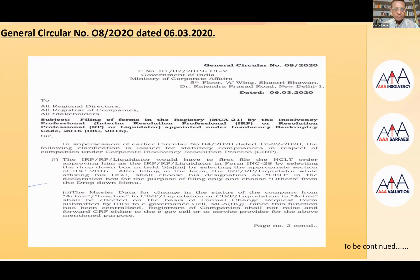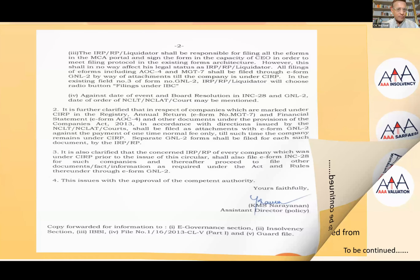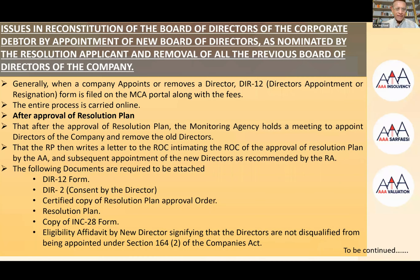The sequence at ROC is: first INC-28, then for appointment of directors, DIR-12 and DIR-2 are submitted and accepted at the back end. The form MGT-7 is also part of this process. Some ROC offices may go slow, so this first step can take time. Once the directors' forms are accepted, the second step regarding shares can begin.